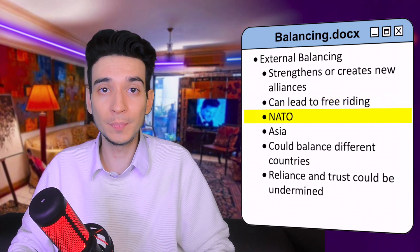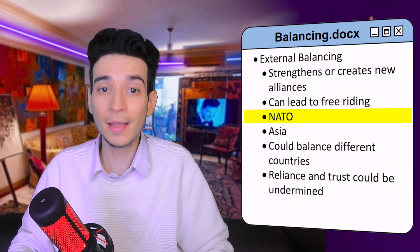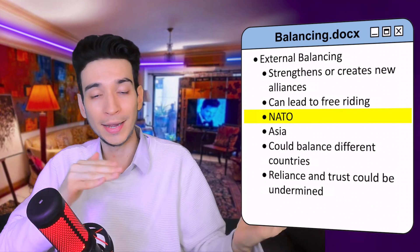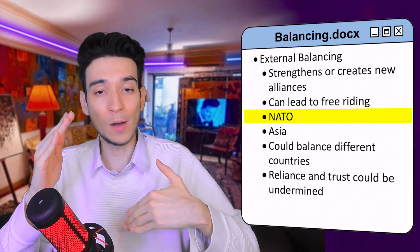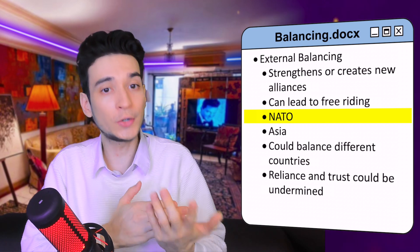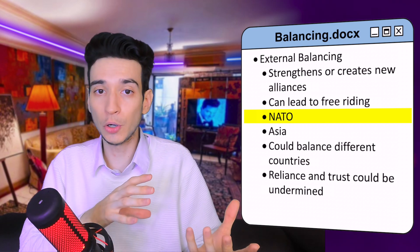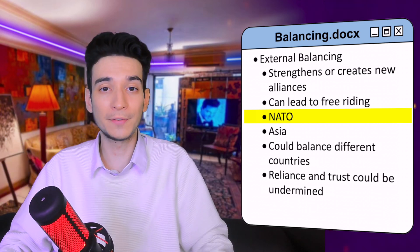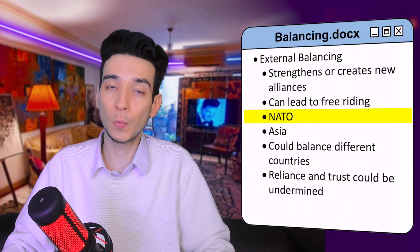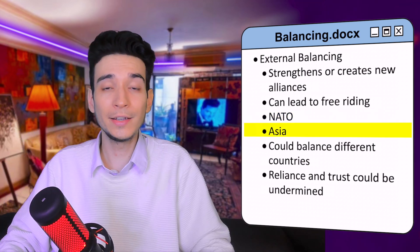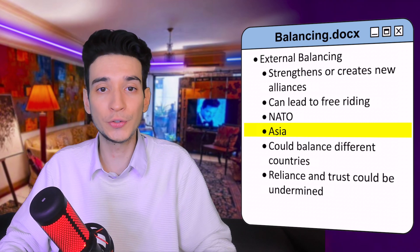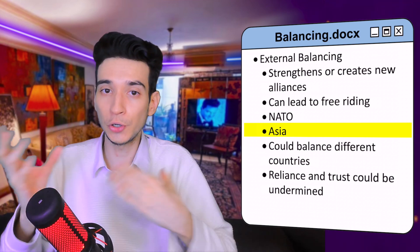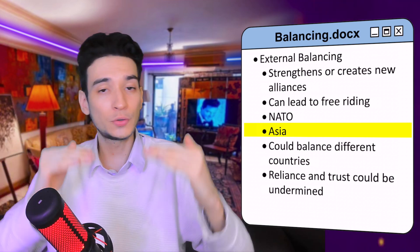An example of external balancing is NATO. The Soviet Union was the biggest power in Europe, so European countries needed to balance against it. Individually they were much weaker, so they formed NATO as an external balancing alliance. Today NATO still serves to balance Russia. Asia has a similar situation with China growing in power, and some countries in the region form external alliances designed to balance China.